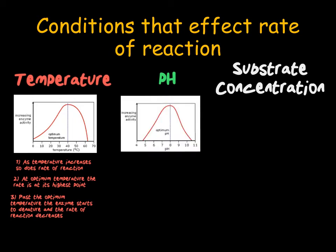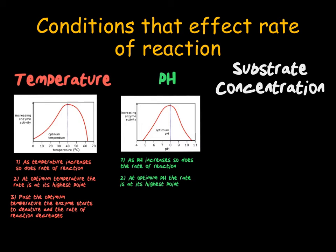Our second graph is for pH. pH is a measure of how acidic or alkaline the solution that the enzymes are in is. Initially, as pH increases, so does the rate of reaction, until we reach the optimum pH for that enzyme. For most enzymes, the optimum pH is often between 7 and 8. However, certain enzymes involved in digestion work best at different pH levels. Once we reach the optimum pH, the rate of enzyme activity is at its highest point. Past this optimum, as with temperature, the enzyme starts to denature and the rate decreases.